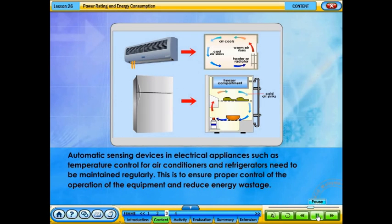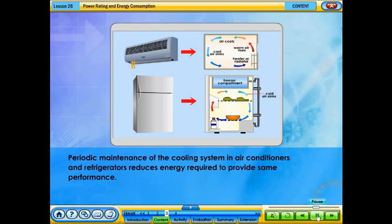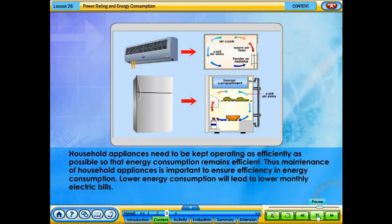Automatic sensing devices in electrical appliances, such as temperature control for air conditioners and refrigerators, need to be maintained regularly. This is to ensure proper control of the operation of the equipment and reduce energy wastage. Periodic maintenance of the cooling system in air conditioners and refrigerators reduces the energy required to provide the same performance. Household appliances need to be kept operating as efficiently as possible so that energy consumption remains efficient.